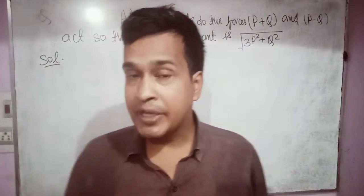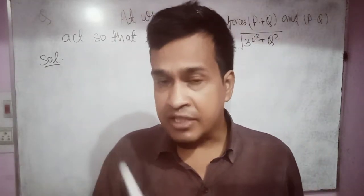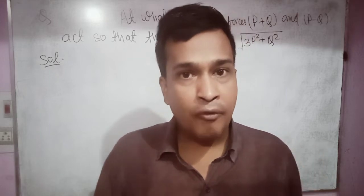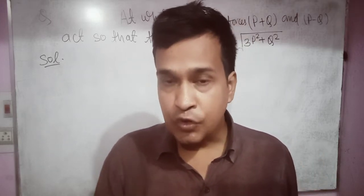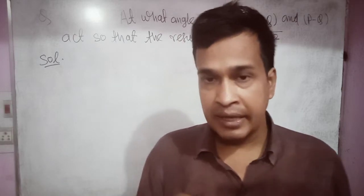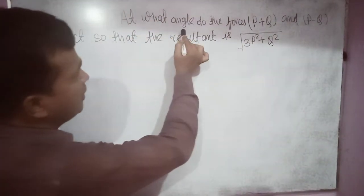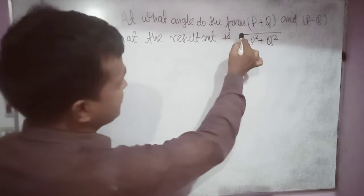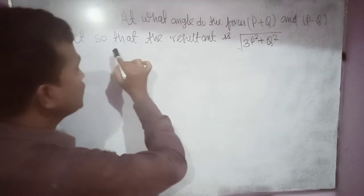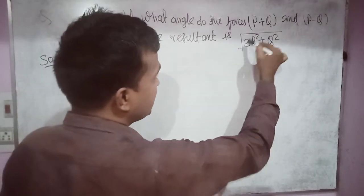Hello guys, welcome to my YouTube channel Annealed Physics Academy. In this video we are going to solve a problem of finding the magnitude of the resultant of two vectors. The question is: at what angle do the forces (P + Q) and (P - Q) act so that the resultant is √(3P² + Q²)?